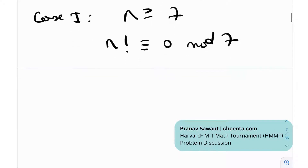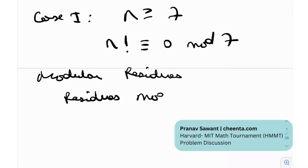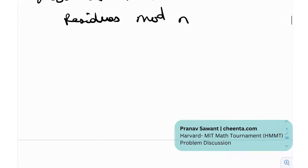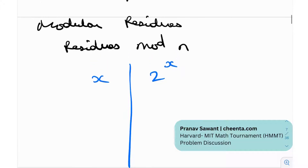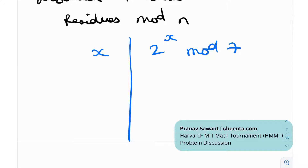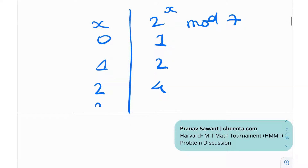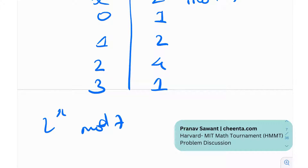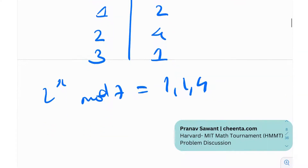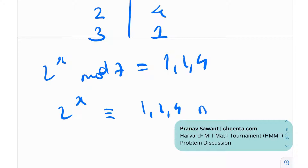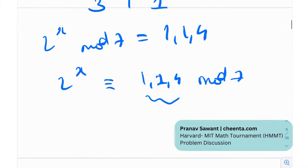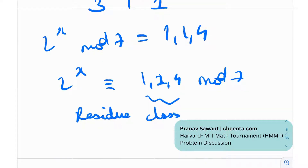Now let's look at modular residues — some people also call them residues mod n. What we do is take values of x and compute 2^x mod 7. If x = 0, we get 1; x = 1 gives 2; x = 2 gives 4; x = 3 gives 8 mod 7 = 1, and then it repeats. So 2^x mod 7 cycles through {1, 2, 4}. This set {1, 2, 4} is called the residue class of 2^x mod 7.